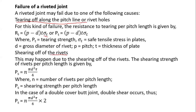Another failure mode is shearing off of the rivets, where the rivets shear off along their cross section and the joint fails. To determine the shear force responsible, Ps = n × (π d²/4) × shear stress, where n is the number of rivets per pitch length. If you are dealing with a double cover butt joint, you multiply by two to account for the double cover.